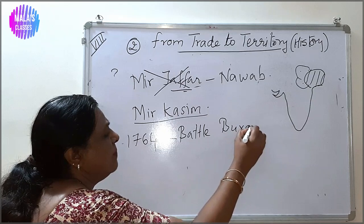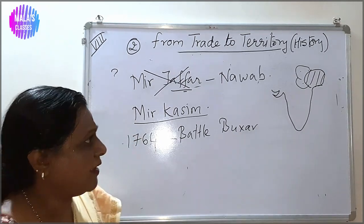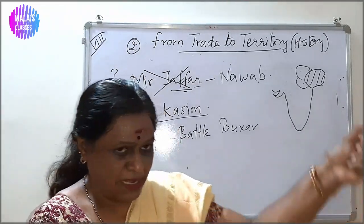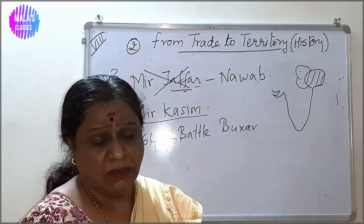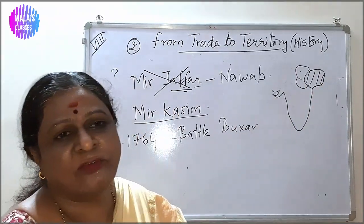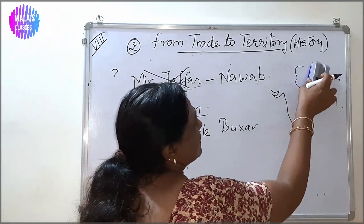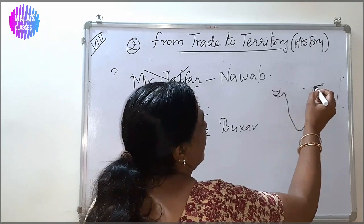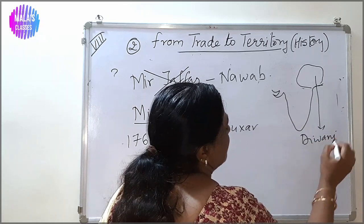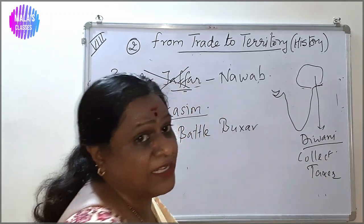There was a battle in the famous battlefield of Buxar, called the Battle of Buxar. It was three against one — but the British were far superior, with the latest arms and ammunition. All three were defeated in 1764. With that, the British were able to annex the territories of Bengal, Bihar, and Odisha. They got the Diwani rights — the right to collect taxes — in this very rich province.